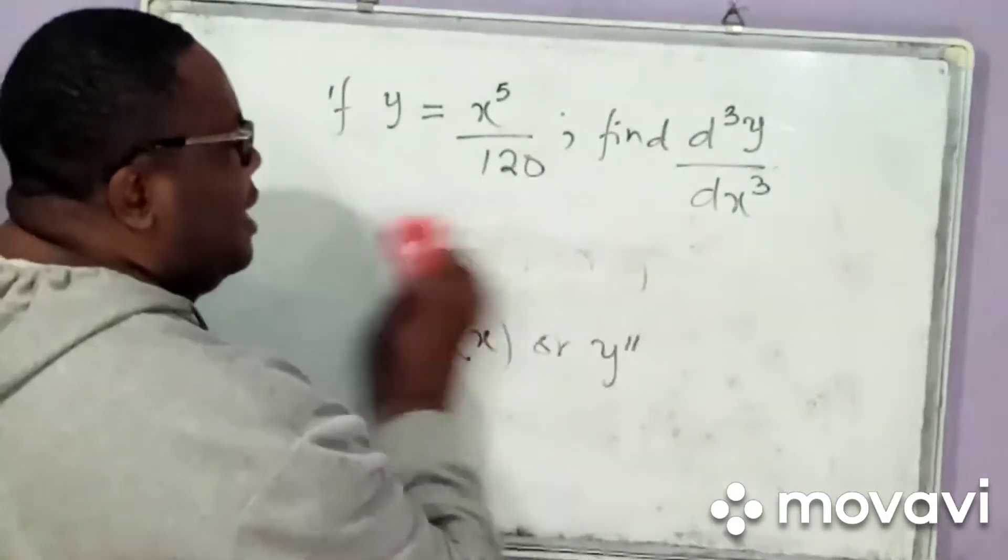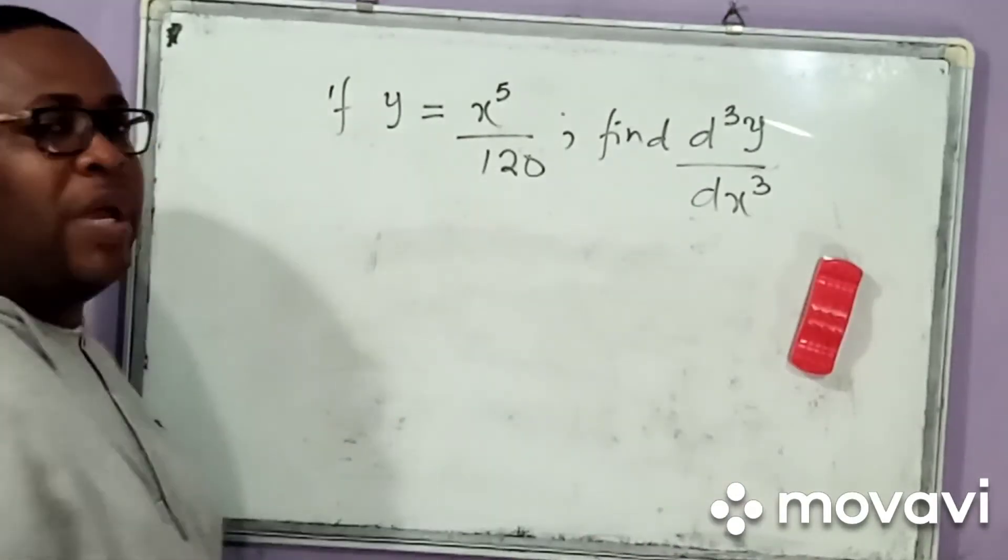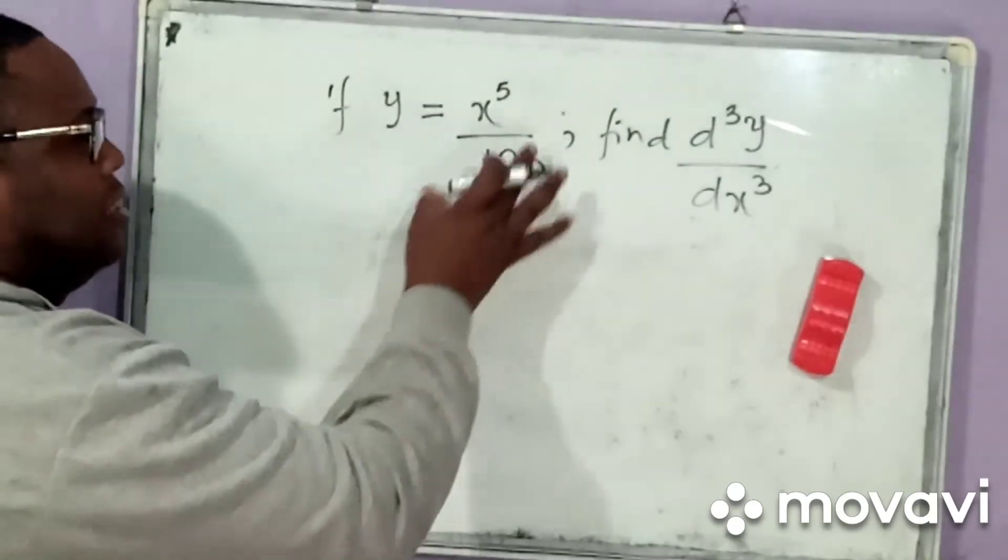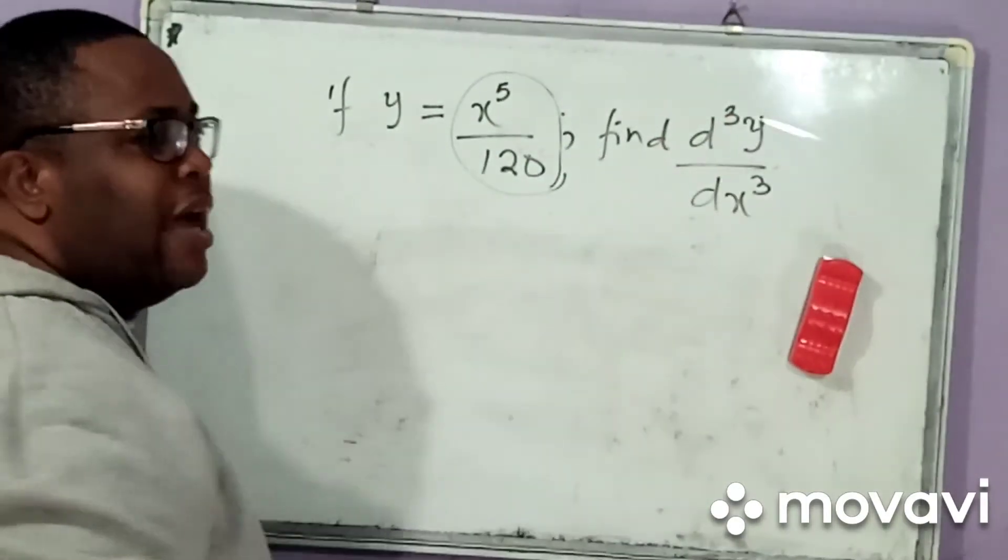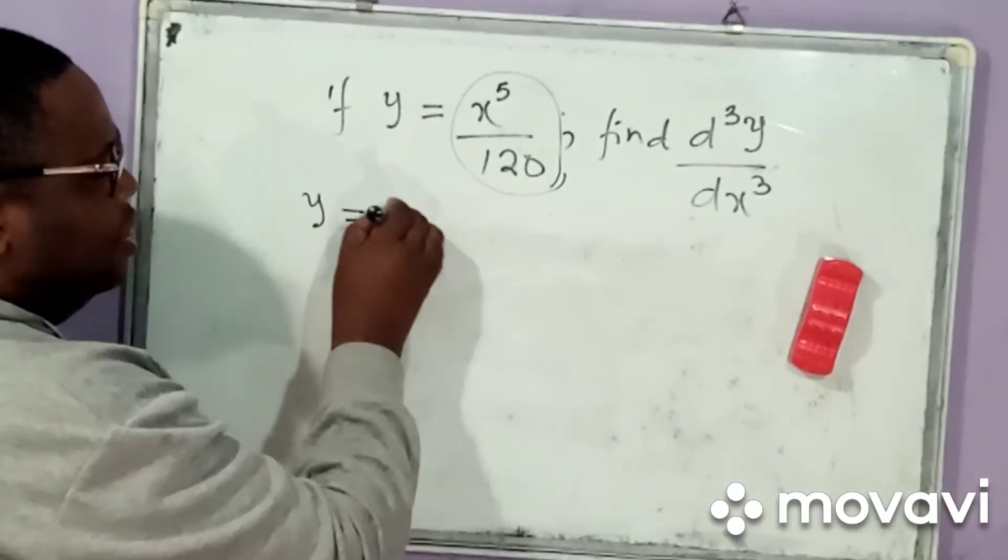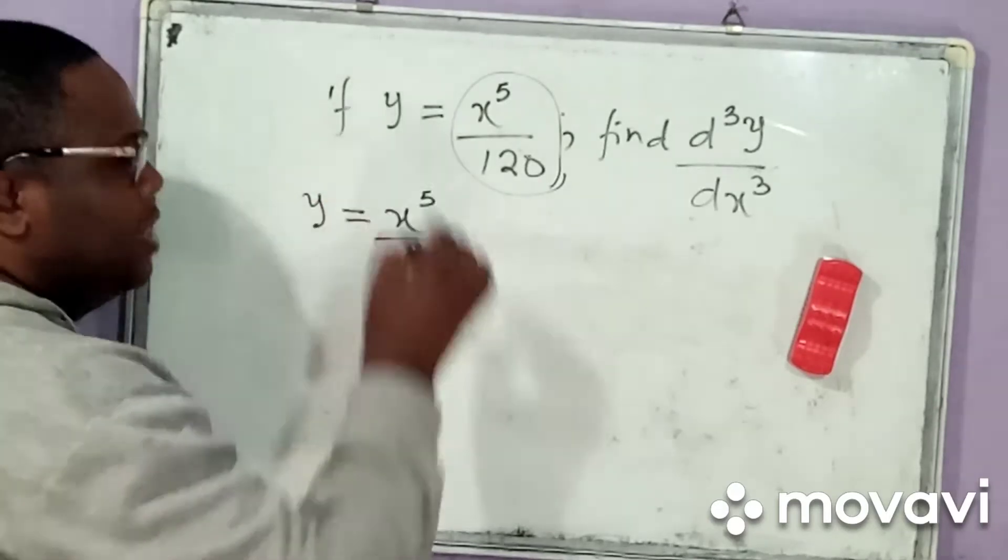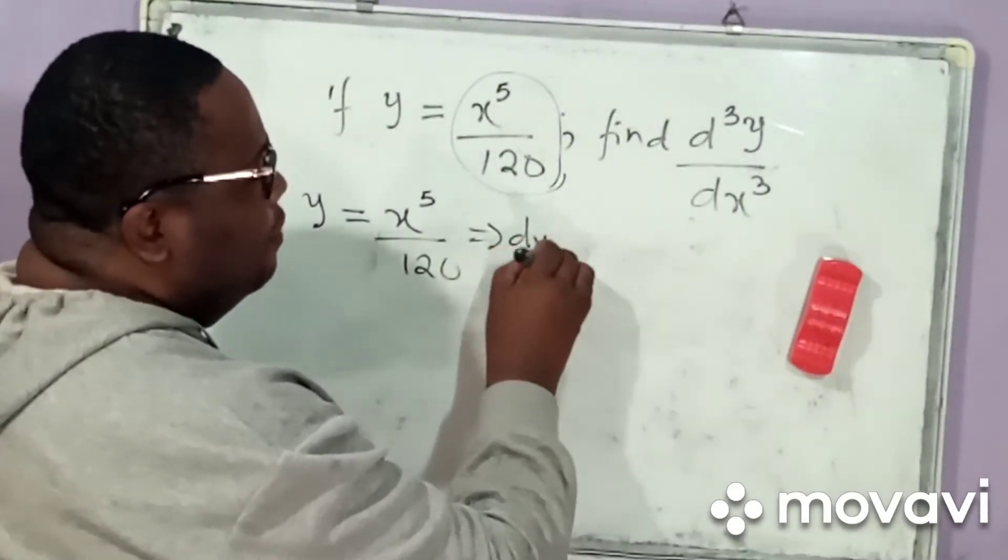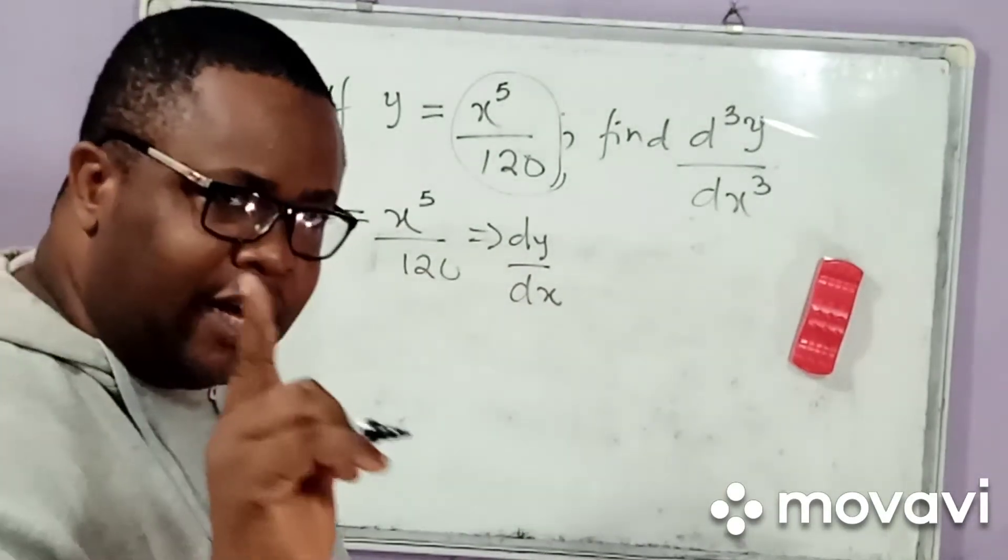Now, let us come quickly to the problem we have to look at, which we have on the board. Now, we have that if y is equal to this function here, if y is equal to x to the power 5 divided by 120, then we should find d cubed y by dx cubed. The very first thing we are going to do, the first thing we will do, this will imply I will differentiate dy by dx. That will differentiate for the first time, that is once.